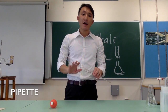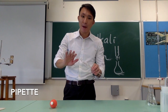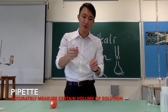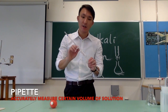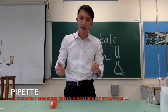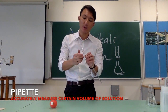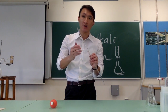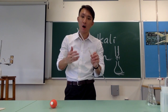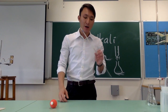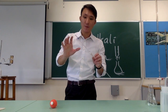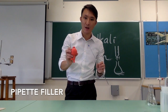The second apparatus is a pipette. A pipette is used to accurately measure a certain volume of solution. This is a 25 ml pipette, which can accurately measure 25 ml of solution. To use a pipette, not only do we have this glass tubing, but we also need a pipette filler.